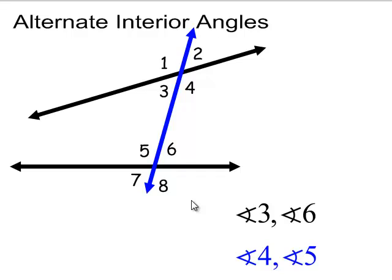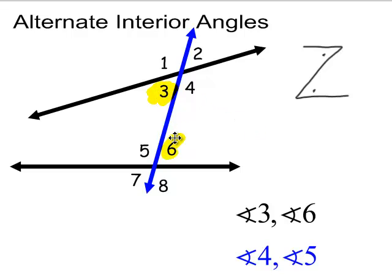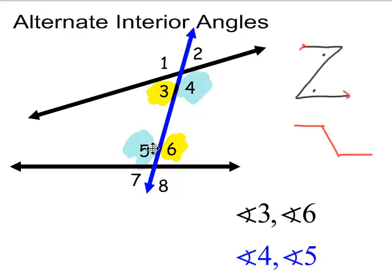Alternate interior angles are those in between the two line segments. I like to tell my students to draw a Z — the inside of the Z gives those acute angles. Angles 3 and 6 are a pair of alternate interior angles. If you picture stretching that Z, you create a Z with obtuse angles, and angles 4 and 5 are alternate interior angles as well.